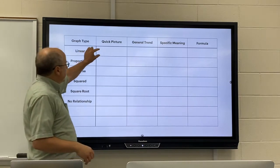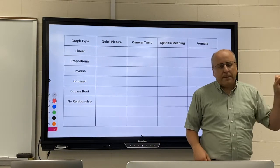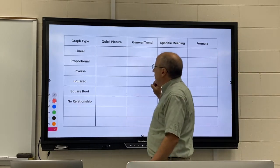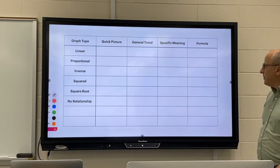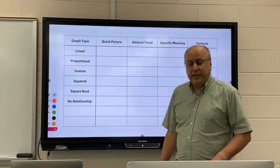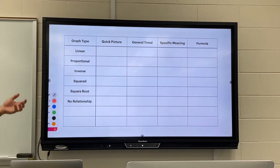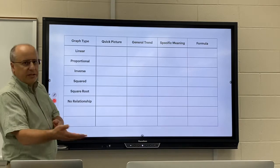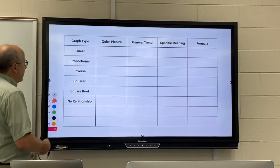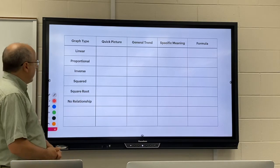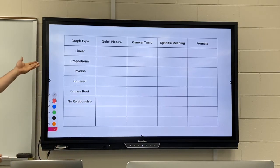Put a little snapshot postage stamp picture of what the graph type looks like. Talk about the general trend, and the general trend would be something like as X gets bigger Y gets bigger at a constant rate, or as X gets bigger Y gets smaller. So put a general trend for each of these.